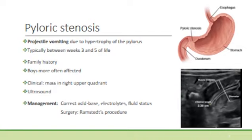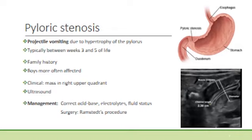Pyloric stenosis presents with projectile vomiting due to hypertrophy of the pyloric area of the stomach. Babies may present from birth to six months, but it most typically occurs between weeks three and five of life. There may be a family history as there is a genetic predisposition. Boys are four times more commonly affected than girls. On examination, you may find a mass in the right upper quadrant. Ultrasound is used to identify the thickness of the pyloric area. Babies are managed by correcting acid-base, electrolyte and fluid status, and in the end surgery is required. During the Ramstedt procedure, the muscle fibres of the hypertrophied pyloric area are incised down to the mucosa.